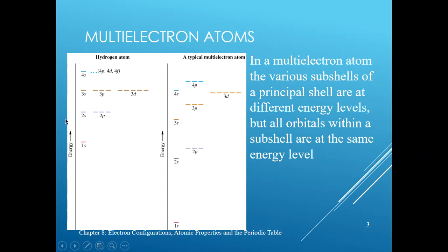Another thing you'll notice is that within each energy level in the hydrogen atom, where you have more than one orbital, they will be of the same energy — for example, the 2s and the 2p. In the multi-electron atom, you don't see that. The 2s orbital is drawn lower compared to the 2p orbitals. Similarly, the 3s orbital is lower in energy than the 3p, which in turn is lower than the 3d.